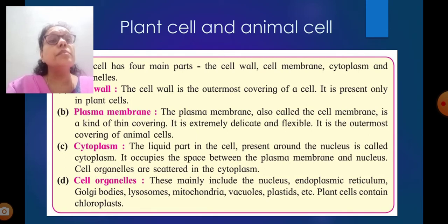Cell wall: The cell wall is the outermost covering of a cell. It is present only in plant cells. Plasma membrane: The plasma membrane, also called the cell membrane, is a thin covering. It is extremely delicate and flexible. It is the outermost covering of animal cells.